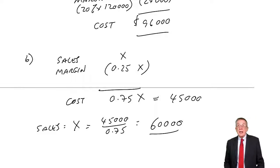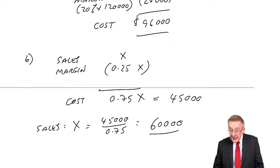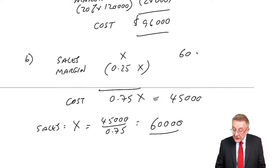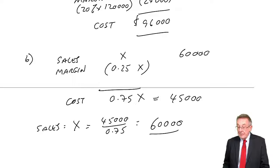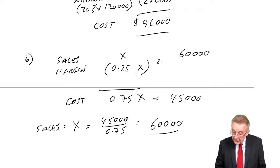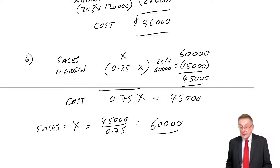So X, 45,000 divided by 0.75, which is the sales, is 60,000. Although don't waste time checking in the exam, it does check, because if the sales are 60,000, the profit, 25% of 60,000 is 15,000. So again, the cost must have been 45,000.